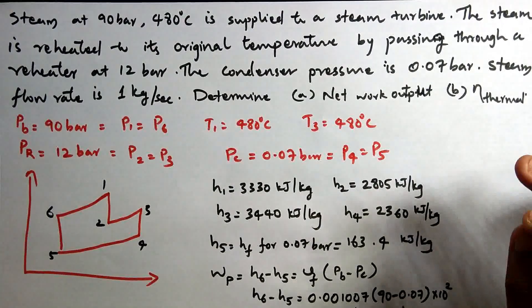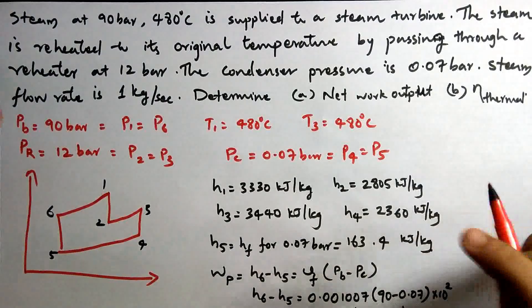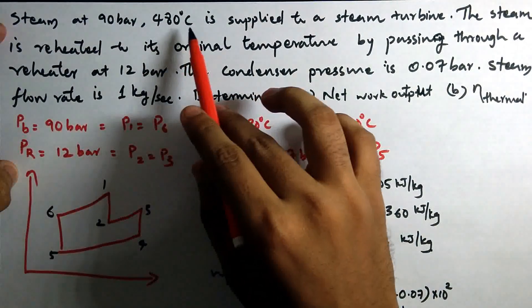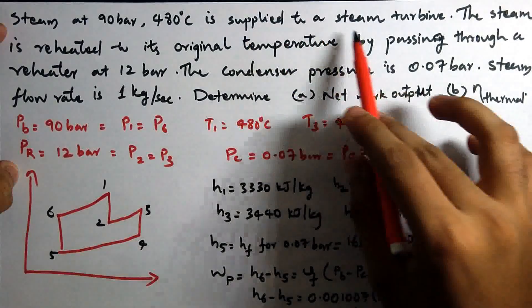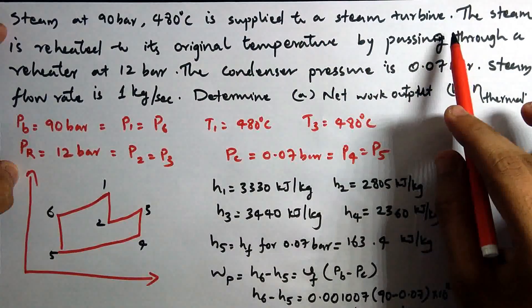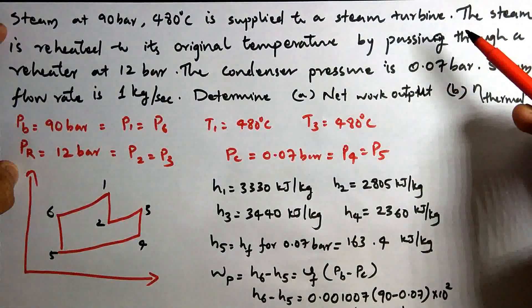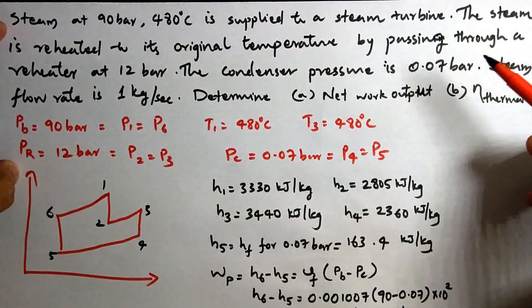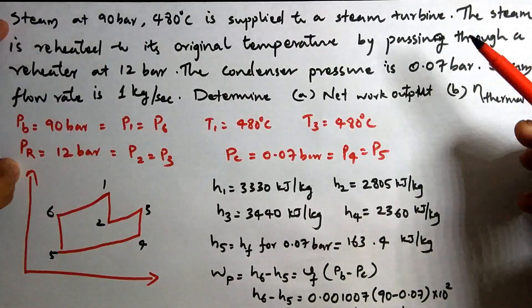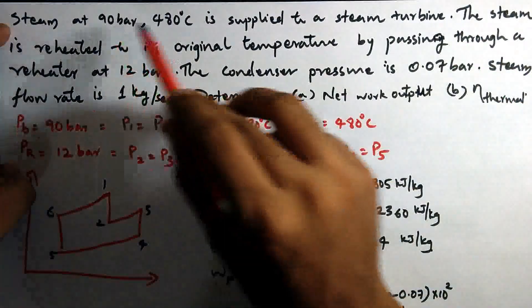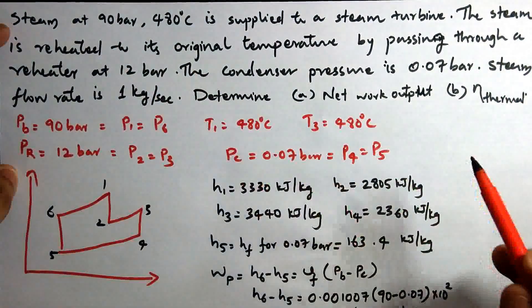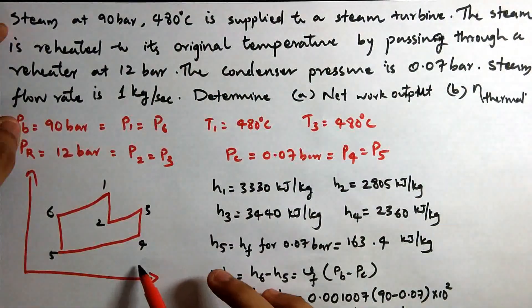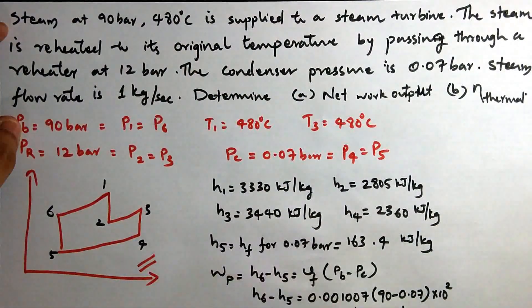Now we will discuss a problem based on the reheat cycle. The question is: steam at 90 bar and 480 degrees Celsius is supplied to a steam turbine. This is the high pressure turbine inlet condition — pressure P1 equals 90 bar and temperature T1 equals 480 degrees Celsius.